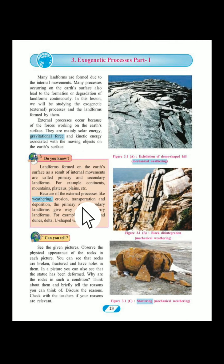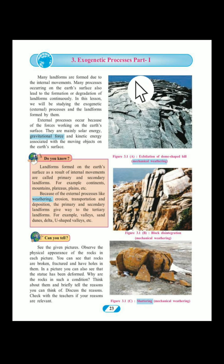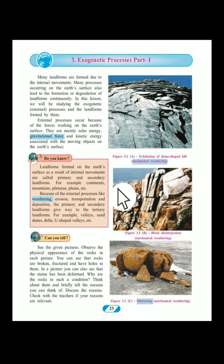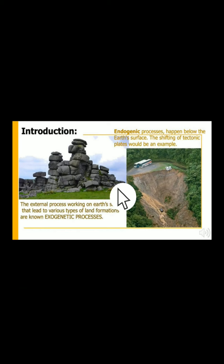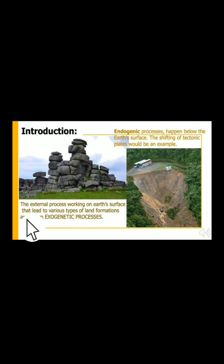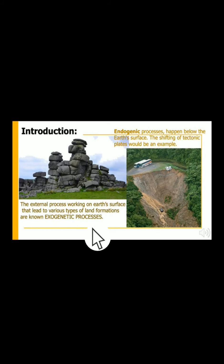These are called exogenetic processes. We have divided them into two parts. So, first, we are going to start with part one in lesson number three. What do we mean by exogenetic processes? The external processes working on the earth's surface that lead to various types of land formation are known as exogenetic processes.